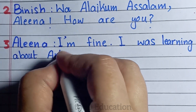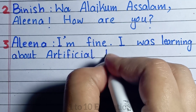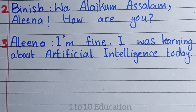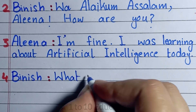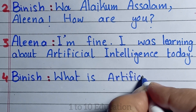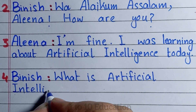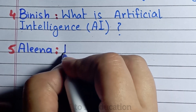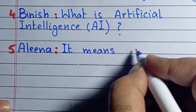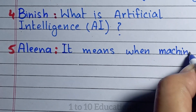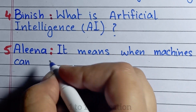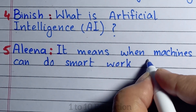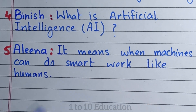Number 3. Alina: I am fine. I was learning about artificial intelligence today. Number 4. Banish: What is artificial intelligence? Number 5. Alina: It means when machines can do smart work like humans.